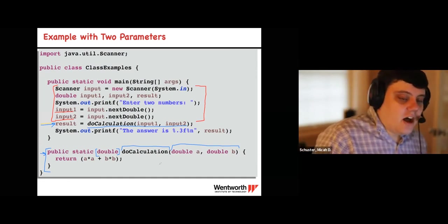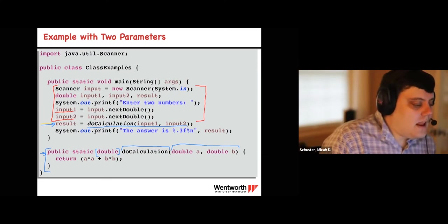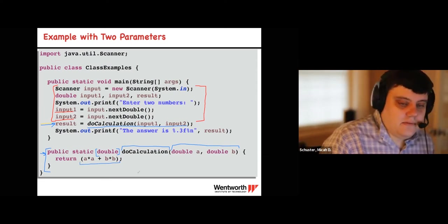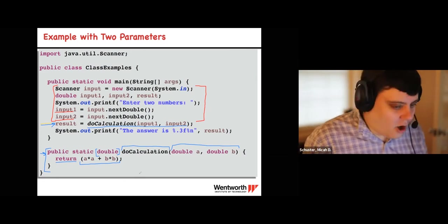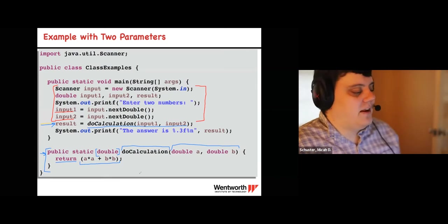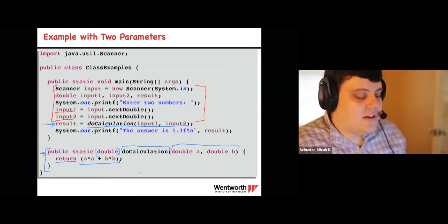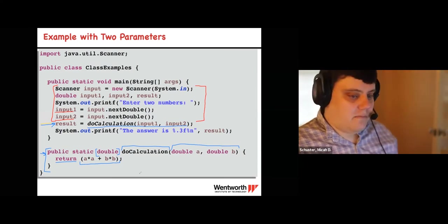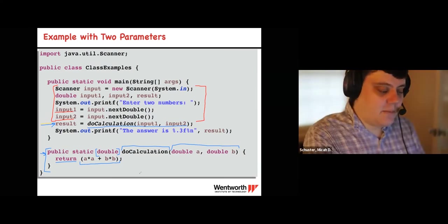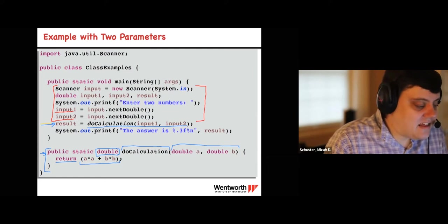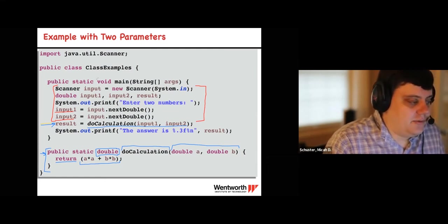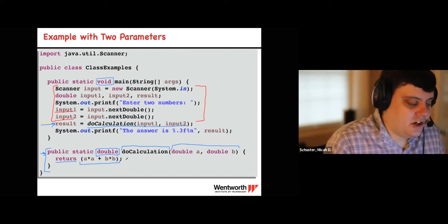The calculation itself can be anything. In this case it takes A and B, does a calculation, and returns the result. In most methods you'll have some kind of return statement — you're going to return something. As long as the return type is anything other than void, you need to return a value of that type. Notice that main is just a method and it says void. This one says double, so we need to return a double.